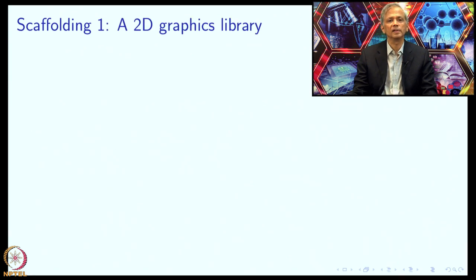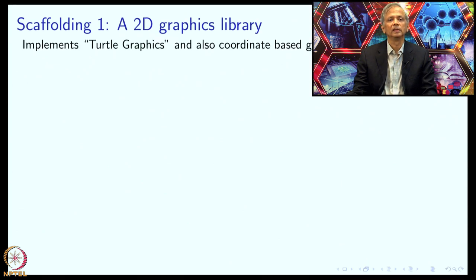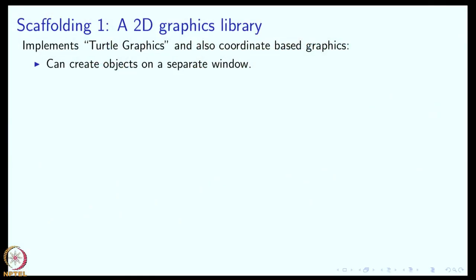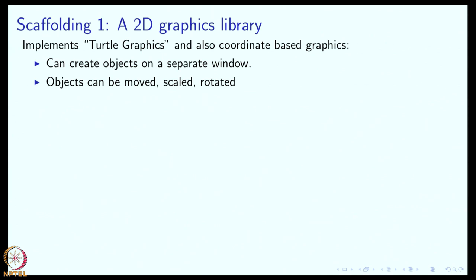The first scaffolding that we use is a two-dimensional graphics library. One part of this graphics library implements the so-called turtle-based graphics, and another part uses coordinate-based graphics. This library will allow us to create a window and then create objects on that window. Objects can be moved, scaled, rotated, object colors can be changed—all the usual things, but all this is two-dimensional.